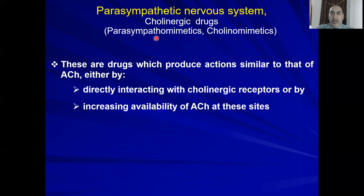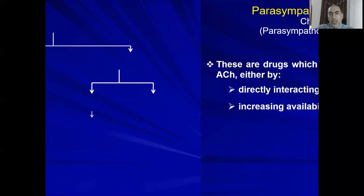Now let's discuss drugs. Cholinergic drugs are also called parasympathomimetics or cholinomimetics. They act either directly — by activating the receptor — or indirectly — by inhibiting the acetylcholinesterase enzyme that breaks down acetylcholine, thereby increasing the amount of acetylcholine at the receptor site. These are indirect parasympathomimetics.